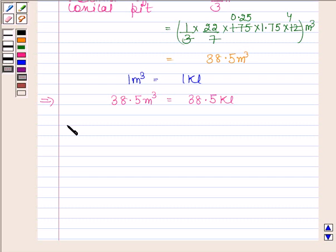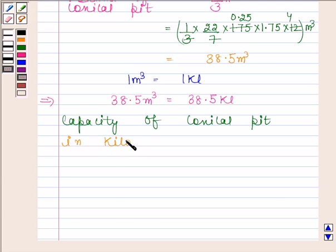Hence, capacity of conical pit in kiloliters is 38.5 kiloliters. This is our required answer. This completes the session. Bye and take care.